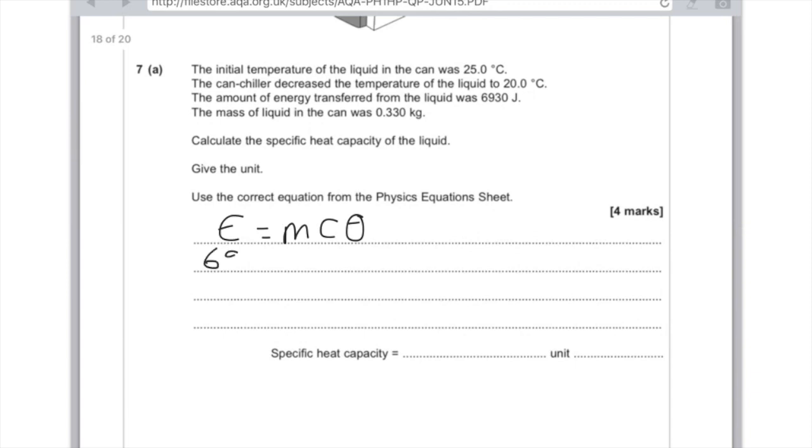The energy we've been told is 6,930. The mass is 0.33 kilograms times C times the temperature change. Well it went from 25 to 20, so that's times 5. Let's solve this now.